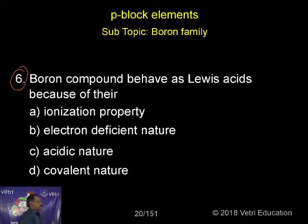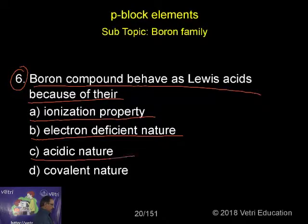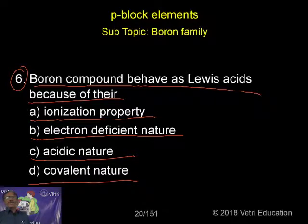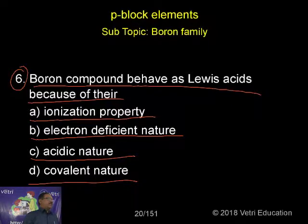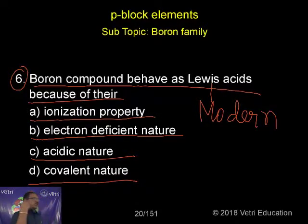Question number six: boron compounds behave as Lewis acid because of their — is it ionization property, electron diffusion nature, acidic nature, or covalent nature? To understand this, you need to know what Lewis acid and Lewis base are. In electrochemistry there are three theories: the Arrhenius theory, the Lowry-Bronsted theory, and the Lewis theory. Lewis theory is the modern theory. According to modern theory, an acid is a substance which accepts a lone pair, and a base is a substance that donates a lone pair.